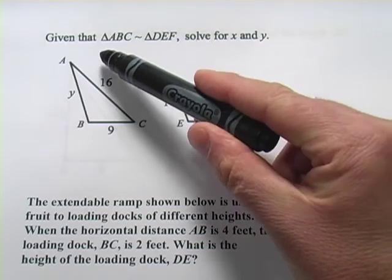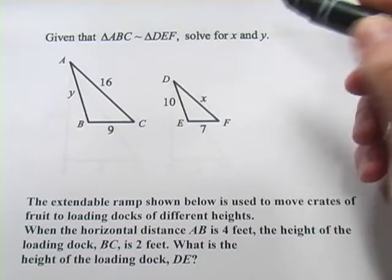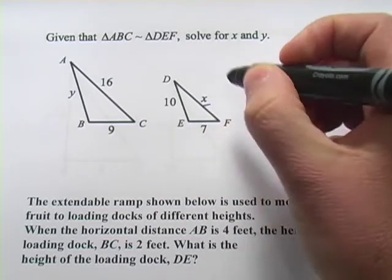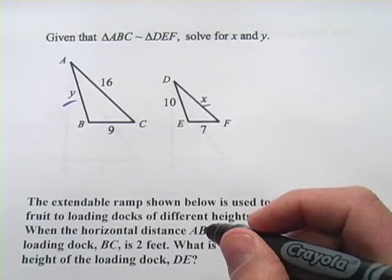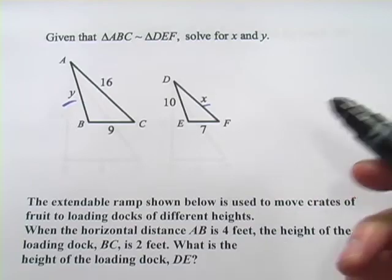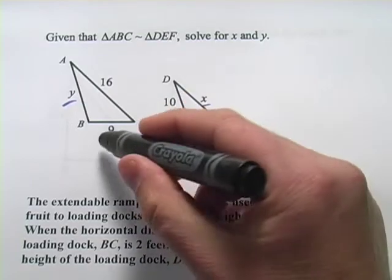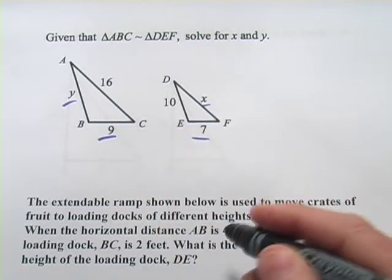It says given that triangle ABC is similar to DEF, solve for X and Y. So in this case we have an unsolved side here and an unsolved side here. The thing to do in that situation is look for a corresponding side that both have numbers on them and it looks like the bottoms of both of these correspond and they have numbers so that's going to be our first ratio.